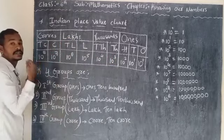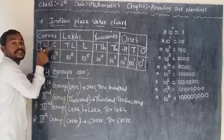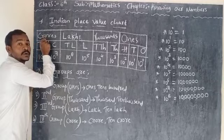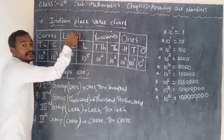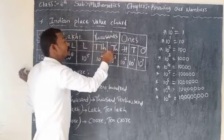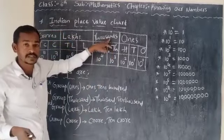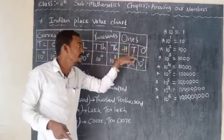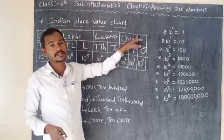In the lakh group, the places are lakh and 10 lakh. In the crore group, the places are crore and 10 crore. So: 1s, 10s, 100 are in the 1s group; 1000 and 10,000 are in the thousands group; lakh and 10 lakh are in the lakh group.